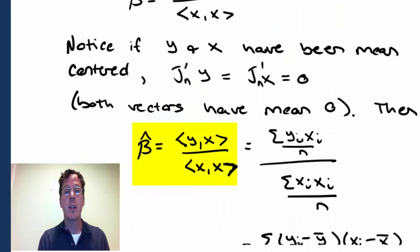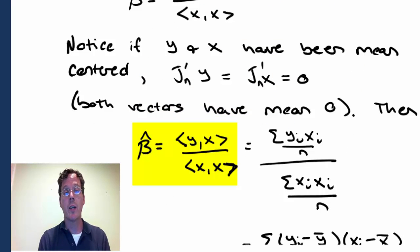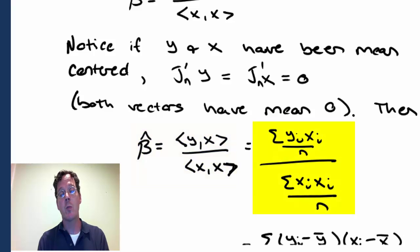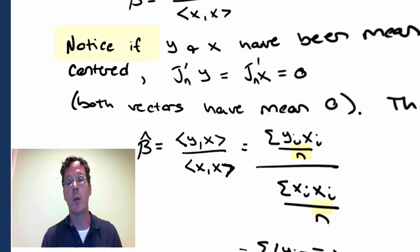So beta hat is the inner product of y and x divided by the inner product of x with itself. That's summation yi xi divided by n divided by summation xi squared divided by n, where here we've just divided the numerator and denominator by n, so effectively multiplied by 1 or did nothing.